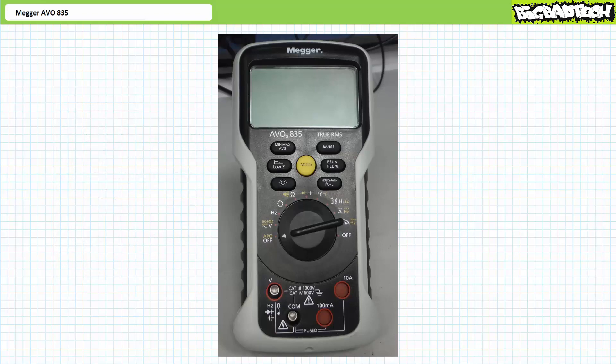An ammeter is a device that measures current through a circuit in units of amps. Ammeters are always placed in series with the item under test. The Megger AVO835 offers two ammeter modes, AC and DC, and in two ranges: up to 10 amps and up to 100 milliamps.